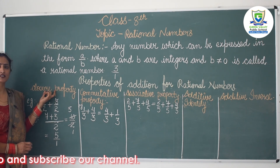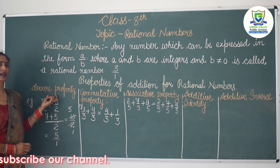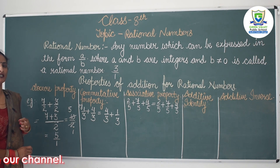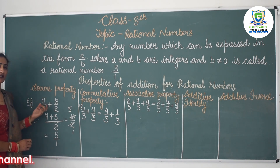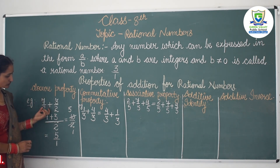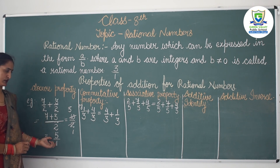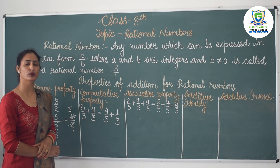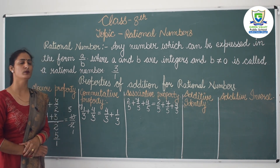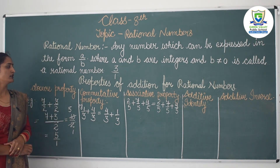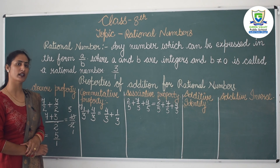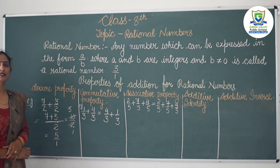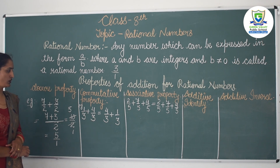So this property holds for rational numbers — the sum of two rational numbers is always a rational number, as shown in the example. The second property is commutative property, which means you can add two rational numbers in any order.